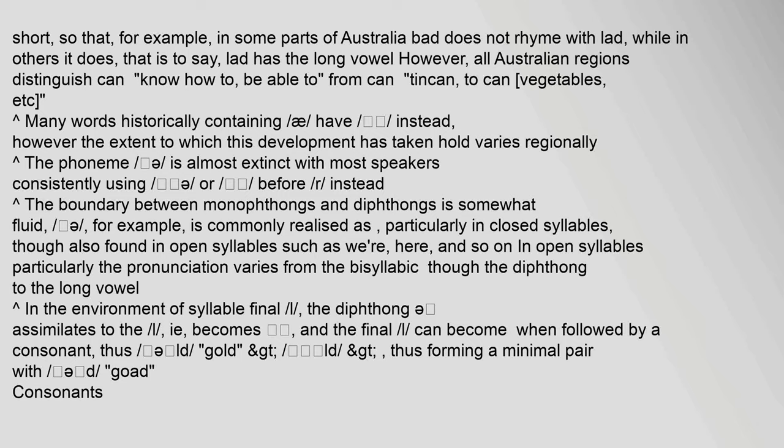The phoneme is almost extinct, with most speakers consistently using alternative forms before 'are'. The boundary between monophthongs and diphthongs is somewhat fluid; for example, one vowel is commonly realized as a monophthong particularly in closed syllables, though also found in open syllables such as 'were', 'hear', and so on. In open syllables particularly, the pronunciation varies from the bisyllabic diphthong to the long vowel.